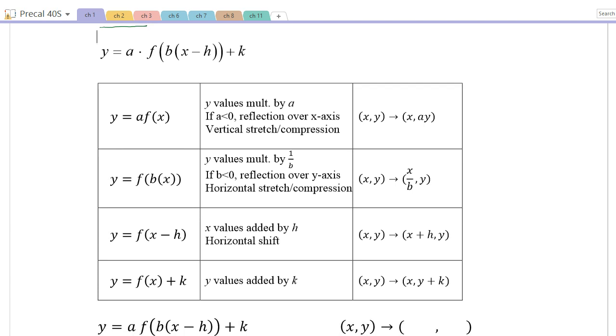So in this chart here, I put together a review of what all the a, b, h, and k do. Just one more time. So when we're talking about the letter a here, what a does is it multiplies all the y values by a. As a result of that multiplication, if a is negative, that's when you get a reflection over the x-axis. And at the same time, you get a stretch or a compression. All of that is because the y values are being multiplied by a.